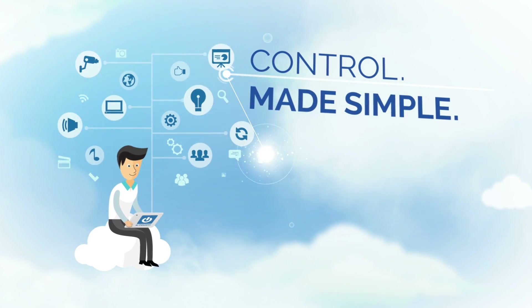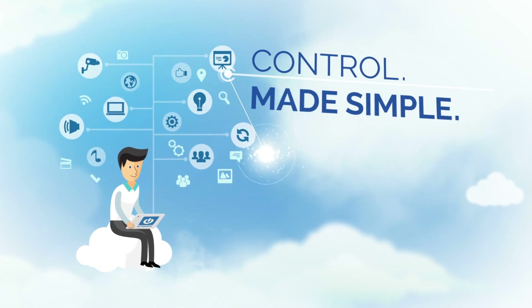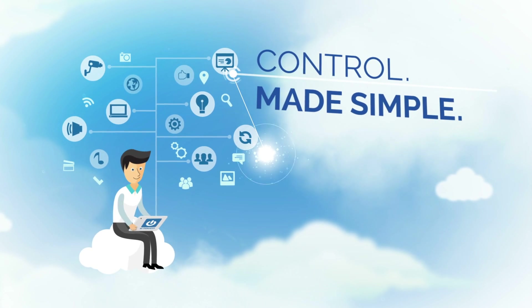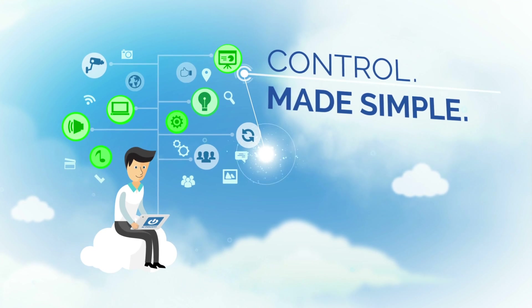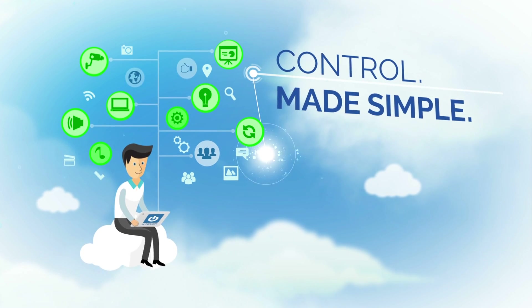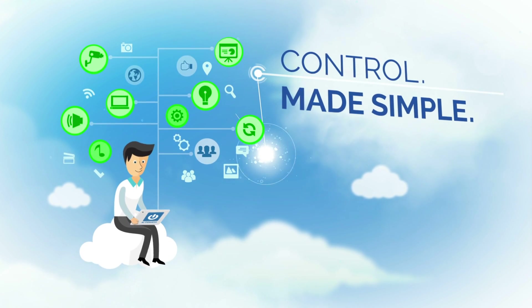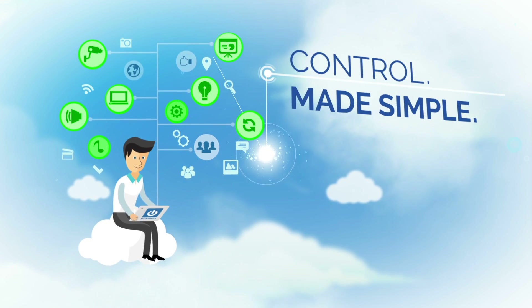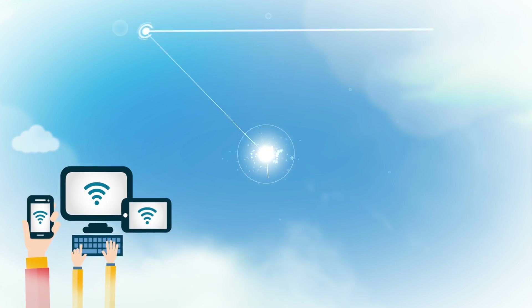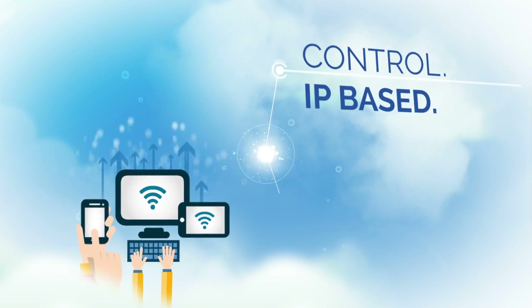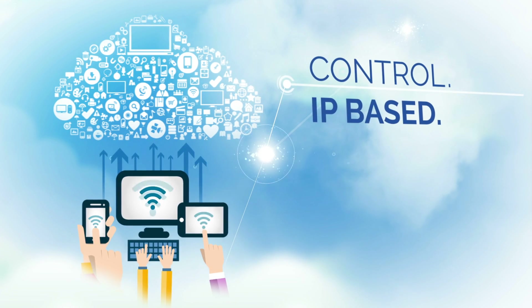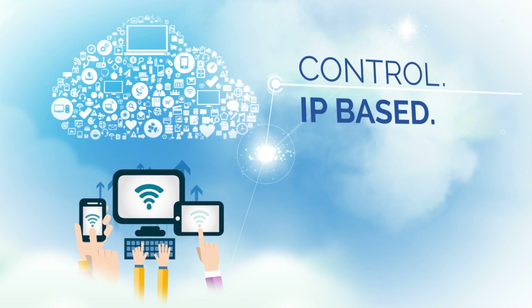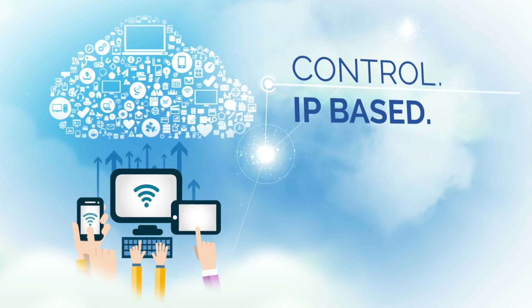Control. Made simple. That's what you get with Kramer's KTouch 3.0 control system — control that's configured for today and beyond. Made simple because it's a cloud-based system. KTouch lets you control anything, anytime, anywhere, using a standard Wi-Fi connection and your existing infrastructure.